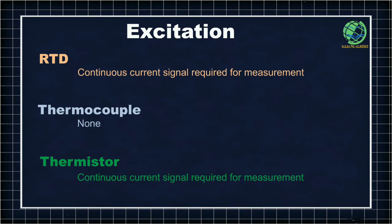In terms of excitation, RTDs always need a continuous current signal to measure temperature, as they change resistance with change in temperature. The same is true for thermistors, which also change resistance with change in temperature. That is not the case with thermocouples — since thermocouples generate a millivolt signal dependent on temperature change, no external excitation is required.